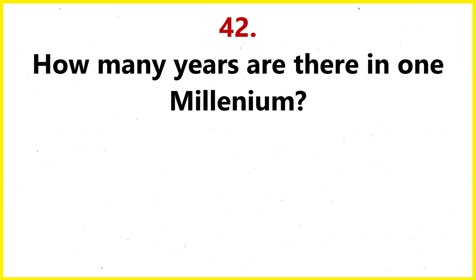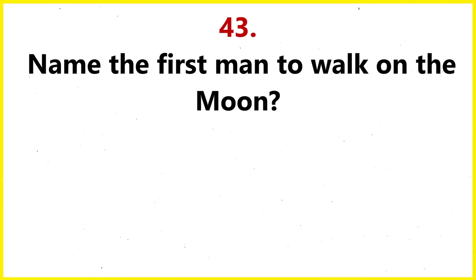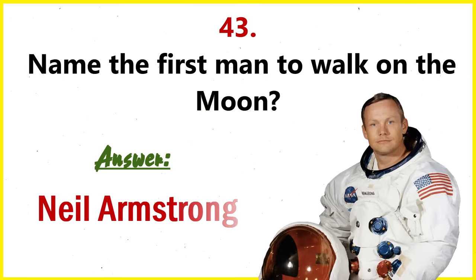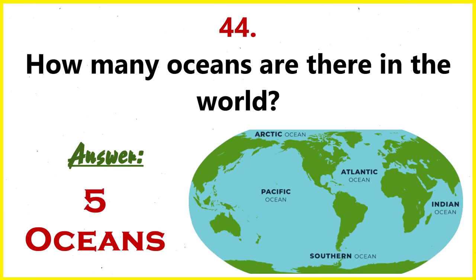How many years are there in one millennium? One thousand years. Name the first man to walk on the moon. Neil Armstrong. How many oceans are there in the world? Five oceans.